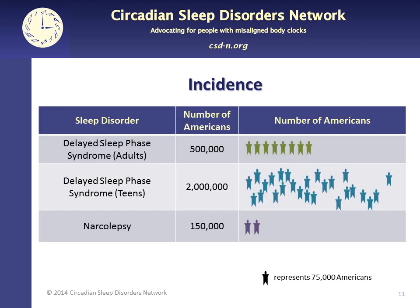How many people have DSPS? Based on a Norwegian study, 0.17% of adults have this disorder — that's well over one in a thousand, over half a million American adults, and about three times as many people as have narcolepsy. But we do need more data since most adults go undiagnosed. It's much more common in teens — estimates of perhaps seven to ten percent of teens are common, that's around two million Americans. Most of them do grow out of it in their twenties.